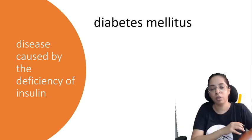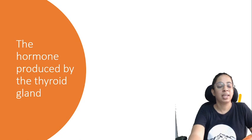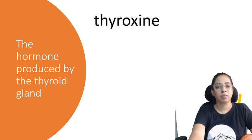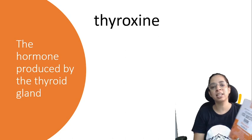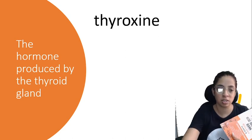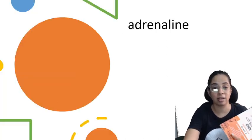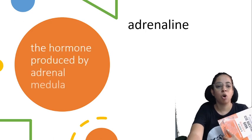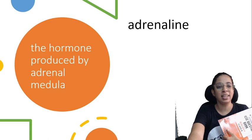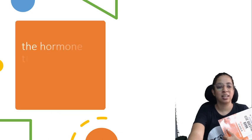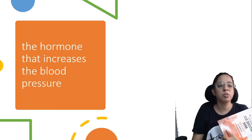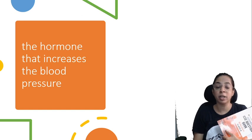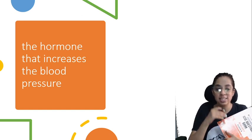Let's see the next question: name the hormone produced by the thyroid gland. Thyroxine is produced by the thyroid gland. The hormone produced by the adrenal medulla is adrenaline. Now, what is the hormone that increases blood pressure? Write your answer in the comment section.